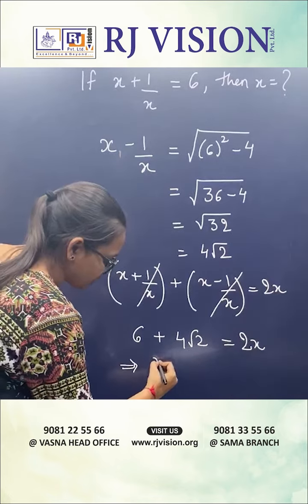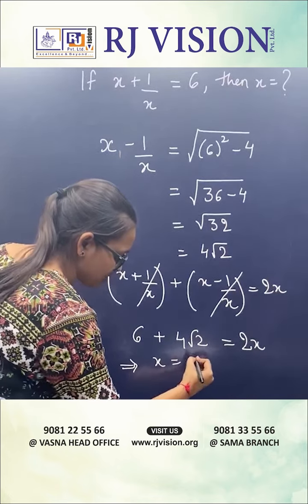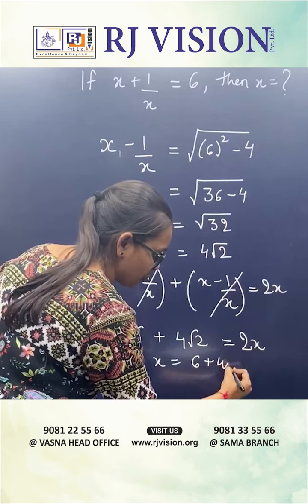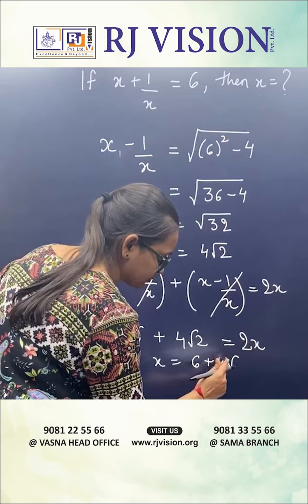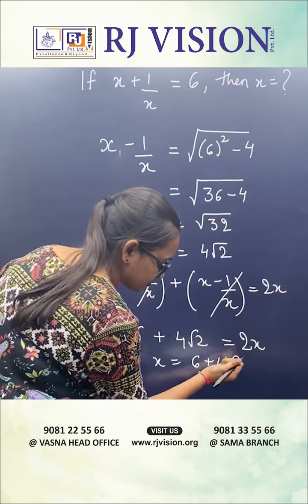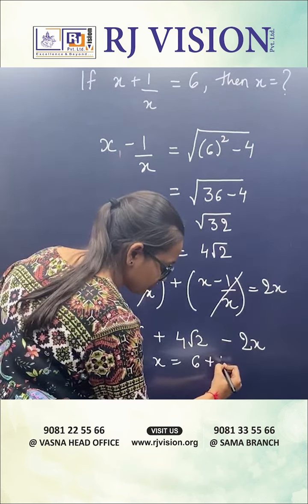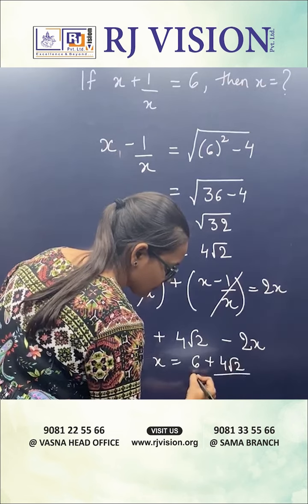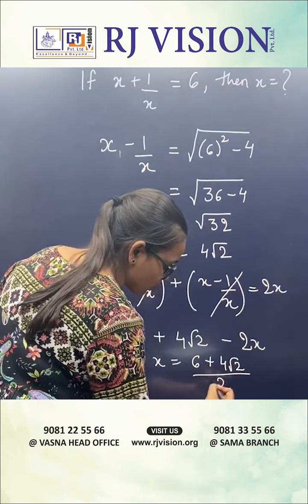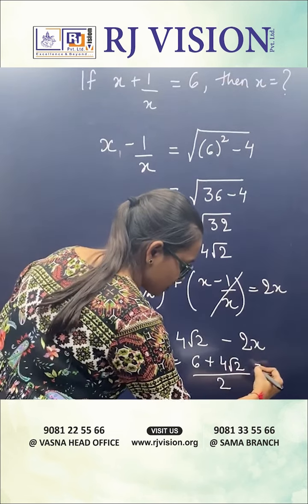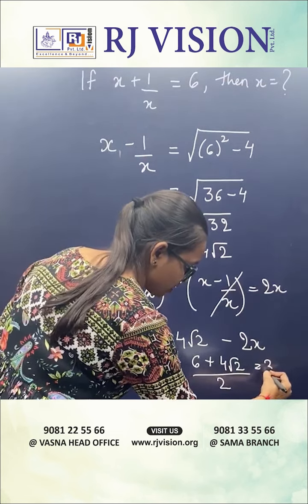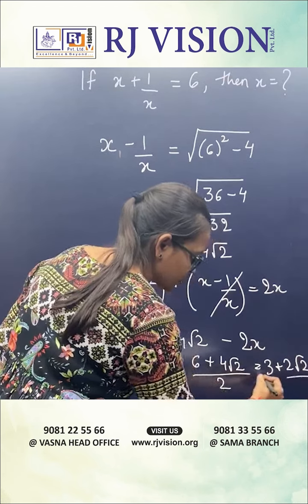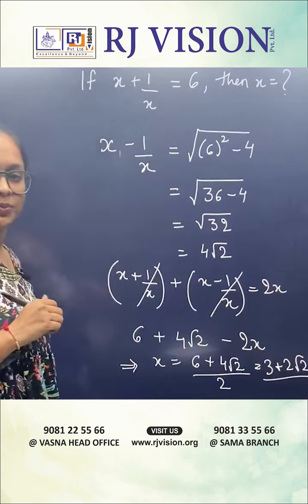From here, we can get the value of x as 6 plus 4 root 2 over 2. This is 3 plus 2 root 2. Thank you.